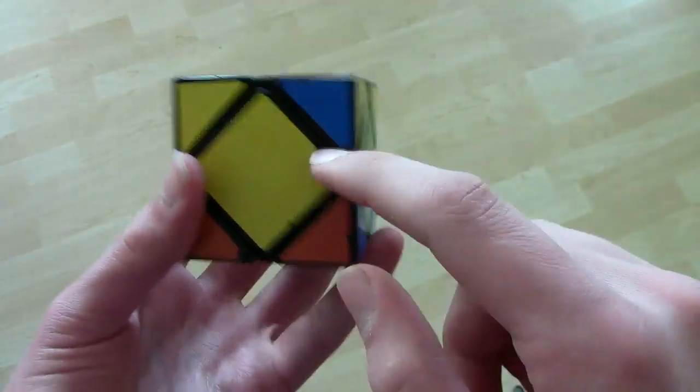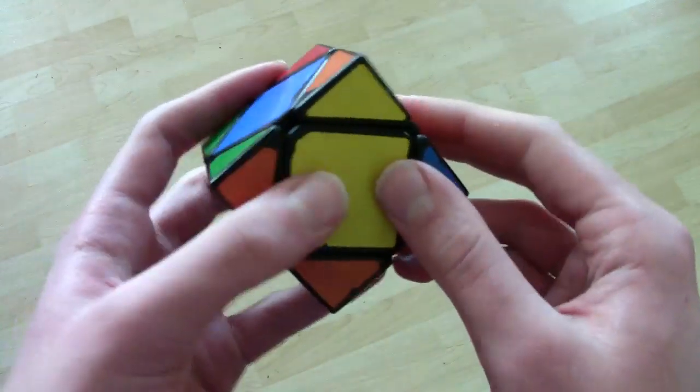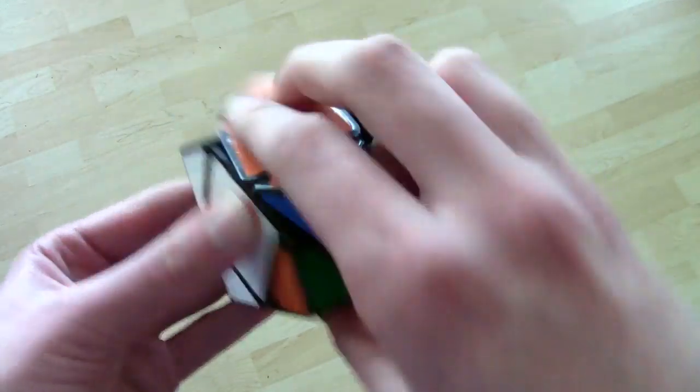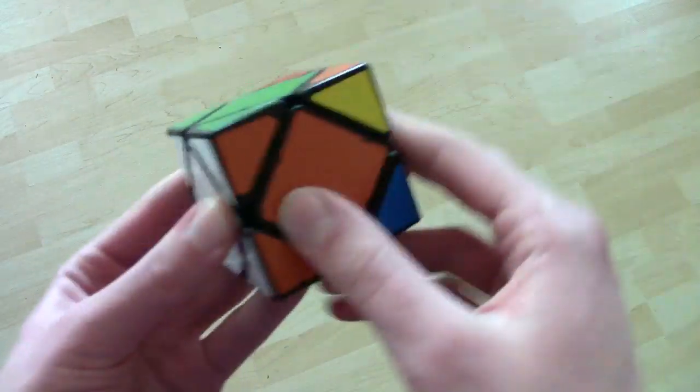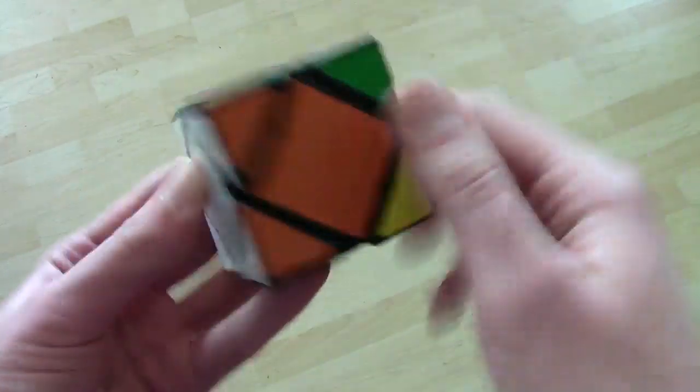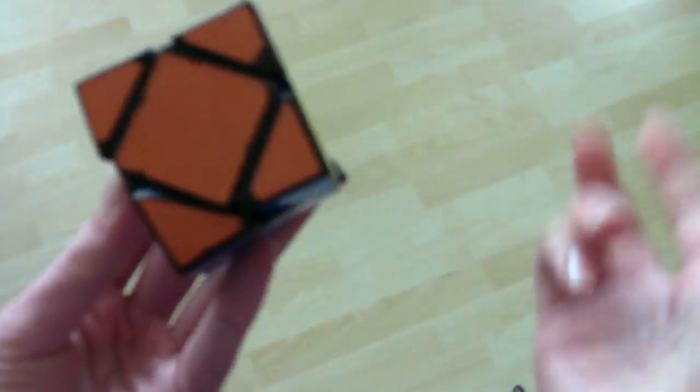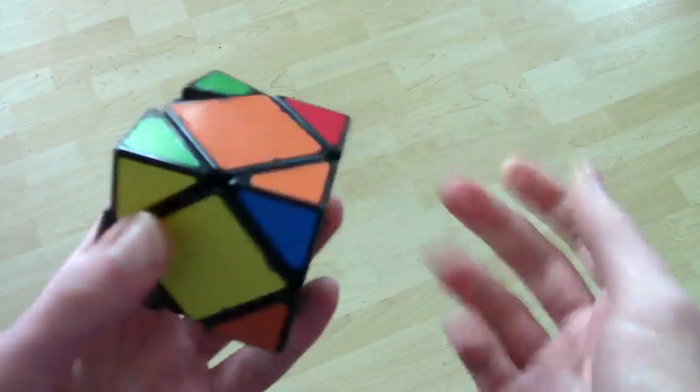So, you all know what the sledgehammer is. And this finger trick is a way of doing the sledgehammer quickly in one movement like this. It can be quite fast. And you can use it to solve whenever you have a sledgehammer case.